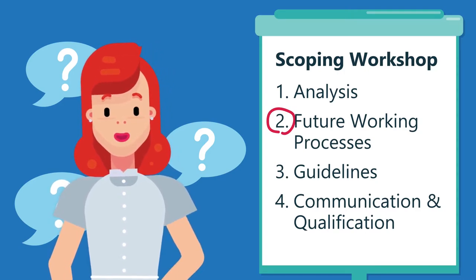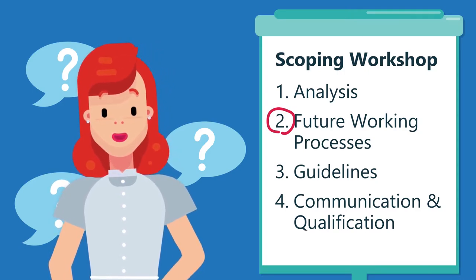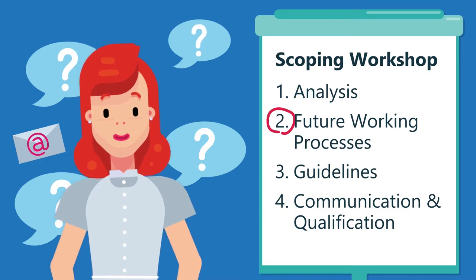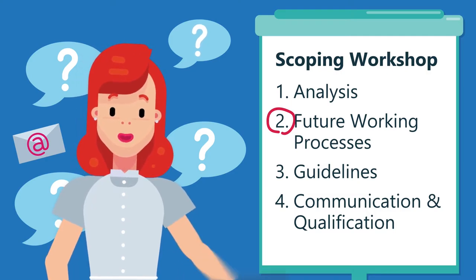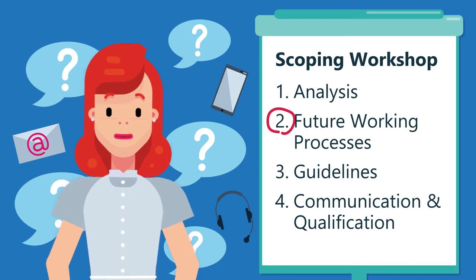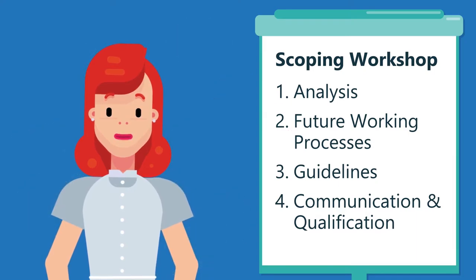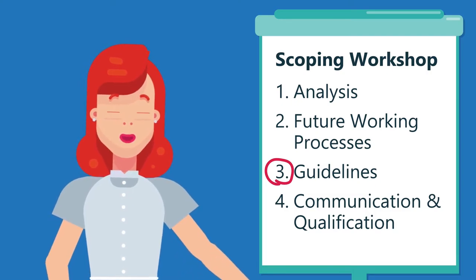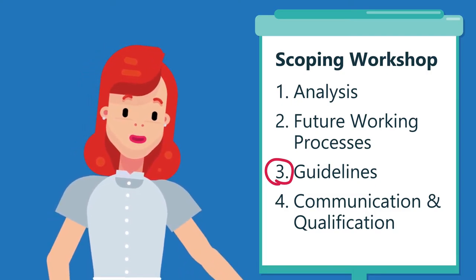Should I stop sending emails and use the Teams chat or Yammer instead? When do I use which kind of communication? As a third step, we help you define a common set of guidelines for using O365 that best fits your team processes and procedures.